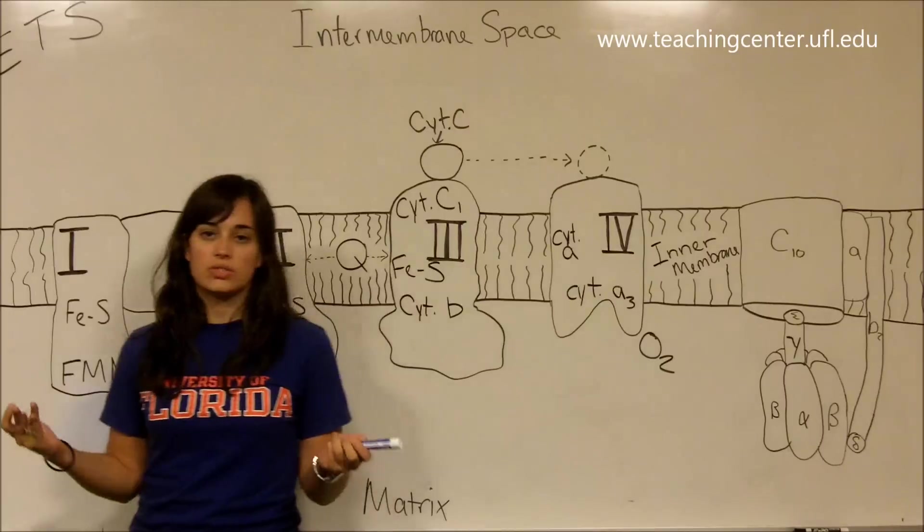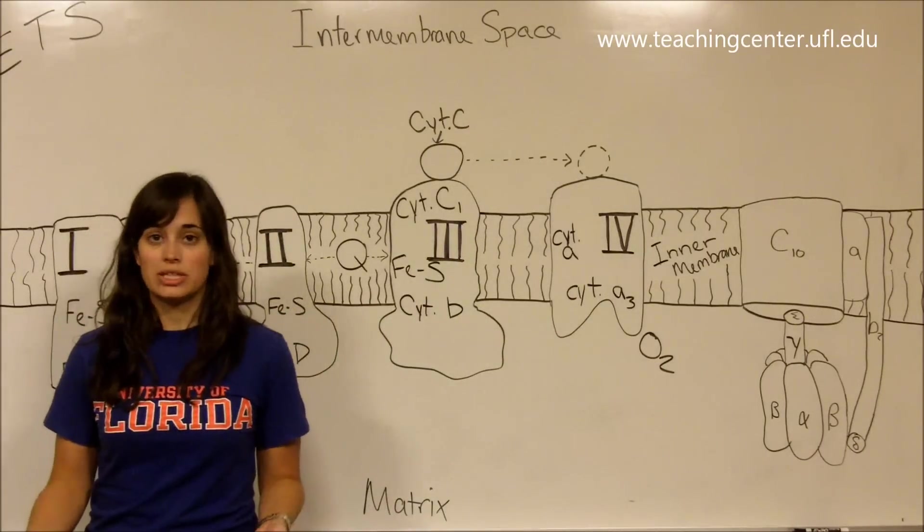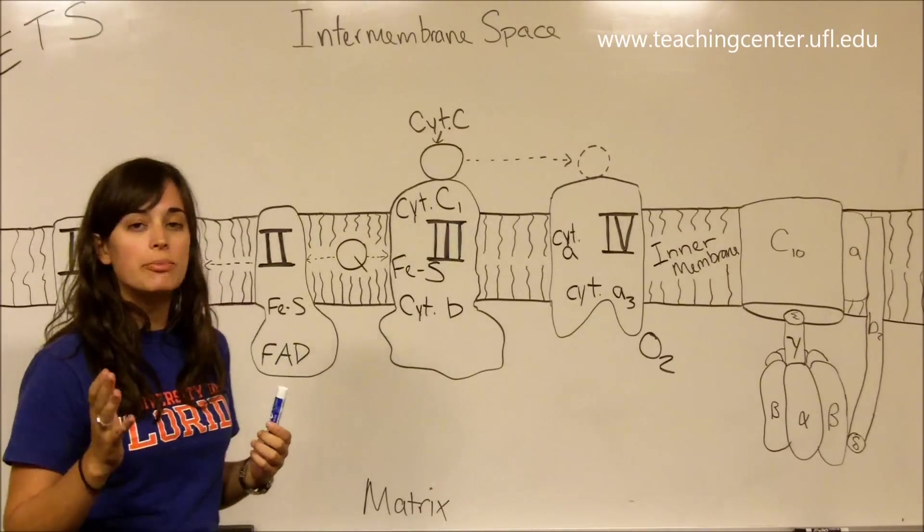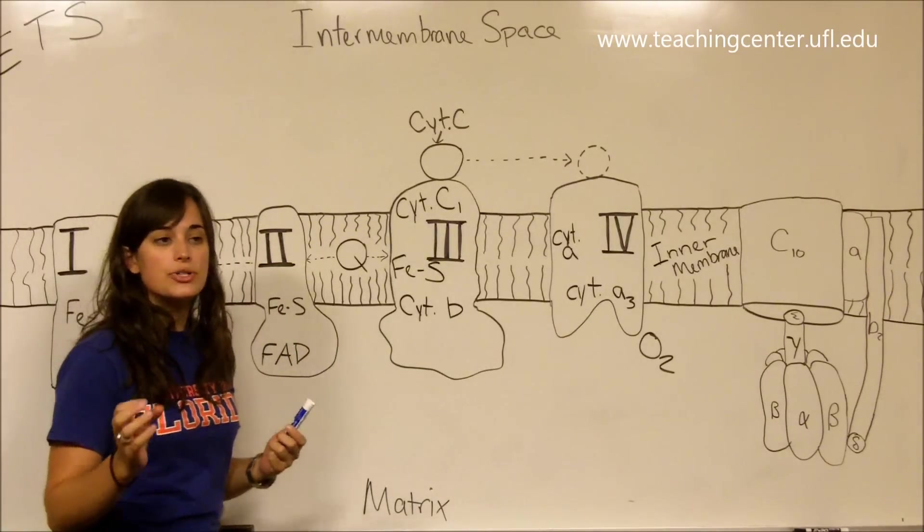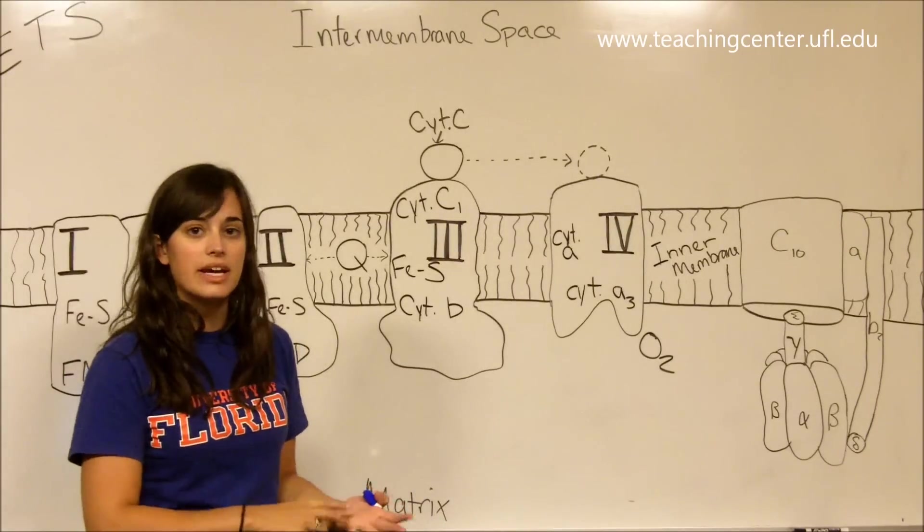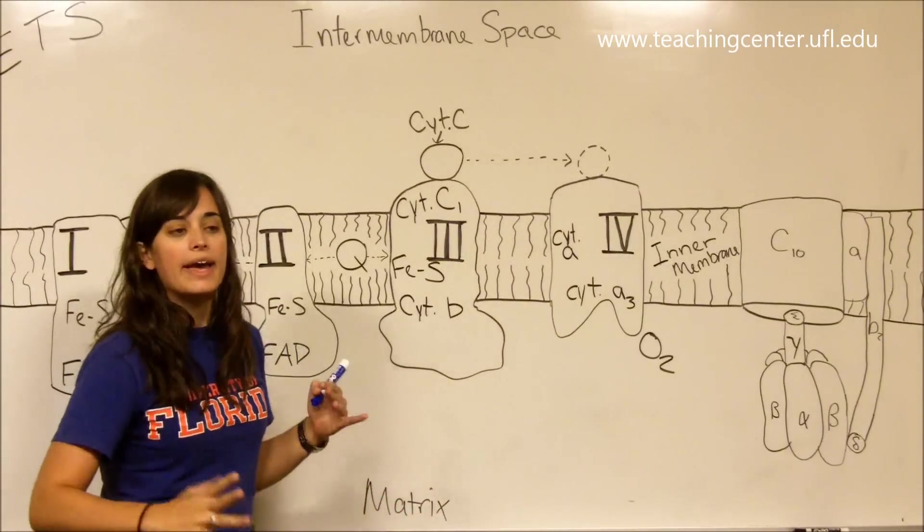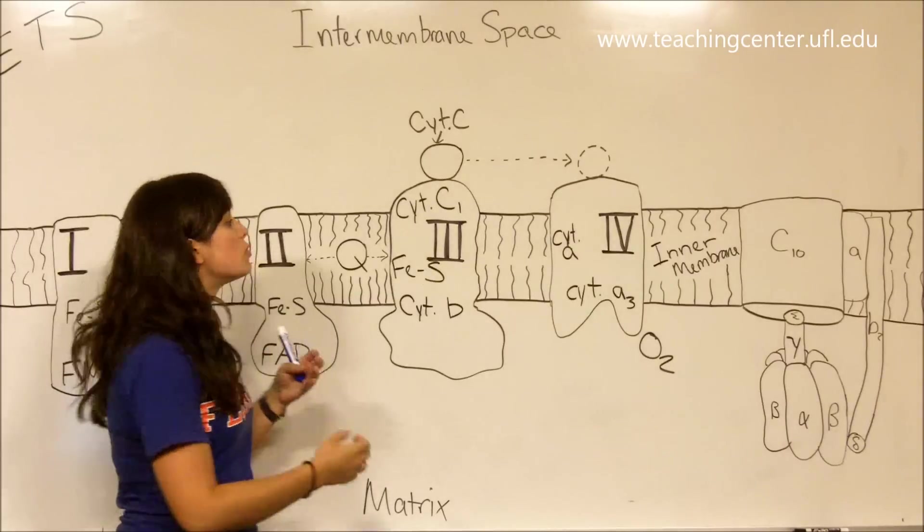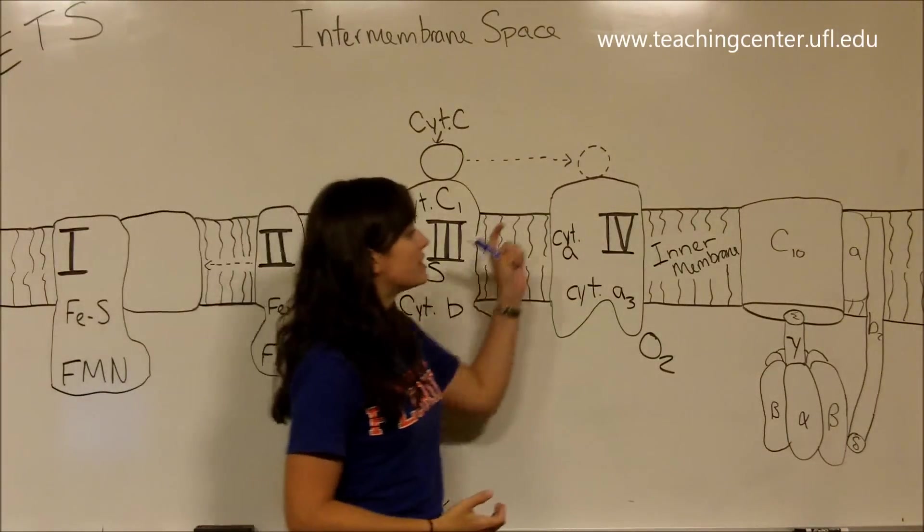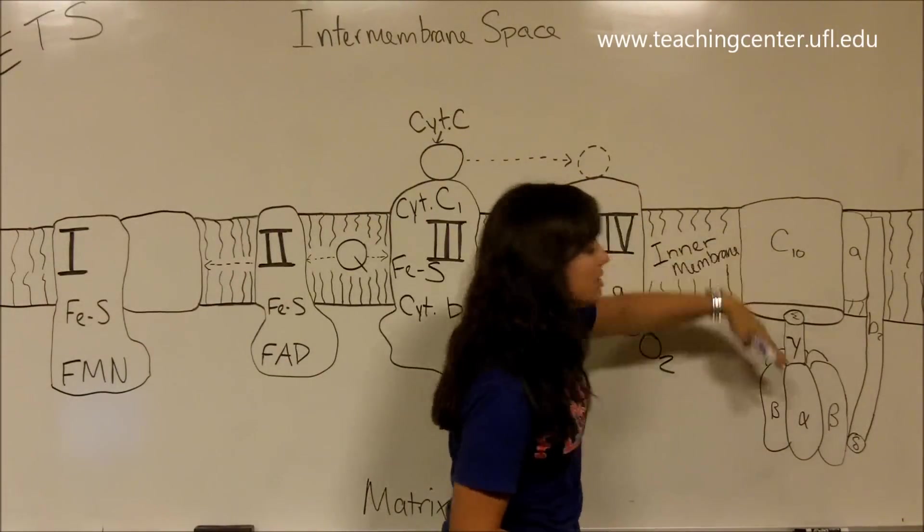What is the electron transport system? The electron transport system is the method that the cell uses to gather the energy in your reduced electron carriers, NADH and FADH2, and transform that energy into a proton gradient here in your mitochondria that's then going to power ATP synthesis.